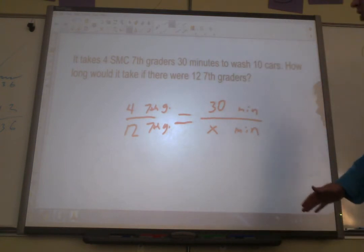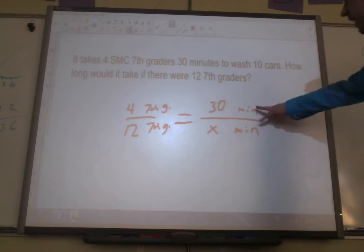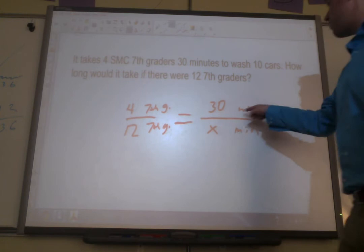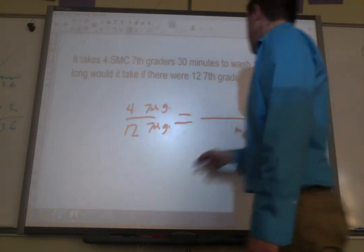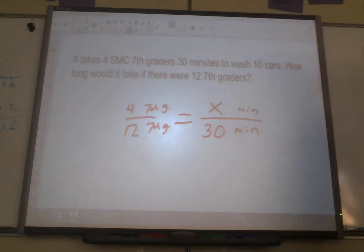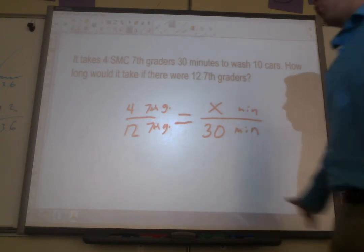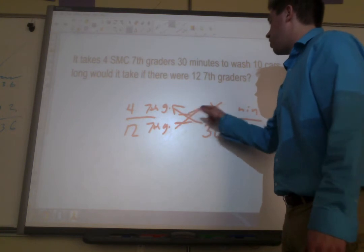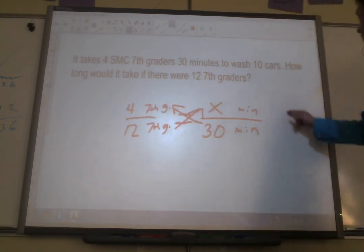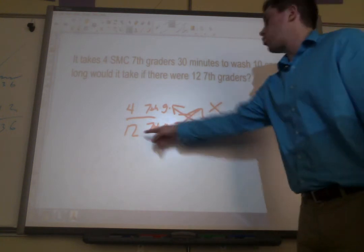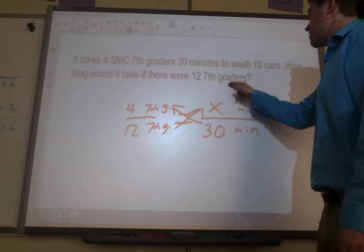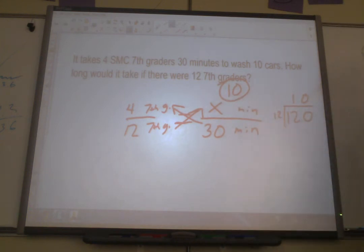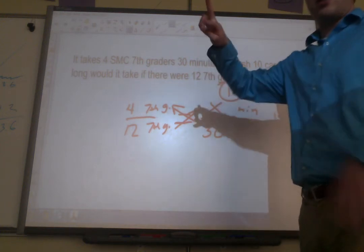The only thing you have to do to change it for an inverse proportion is you're going to take one side and just flip it. Okay, so we're going to take our 30 minutes over X minutes, and we're going to flip it and make it the opposite. We're going to make it X minutes over 30 minutes. Now that we've flipped it to make it an inverse proportion, we do exactly what we've always done. We cross multiply and solve. 30 times 4 is going to be 120. 120 divided by 12 is going to give us 10. So how many minutes would we expect it to take? 10 minutes for a group of 12 7th graders. Again, first set up the proportion like normal. If it's inverse, all you have to do is flip one side. Let's look at one more example today.